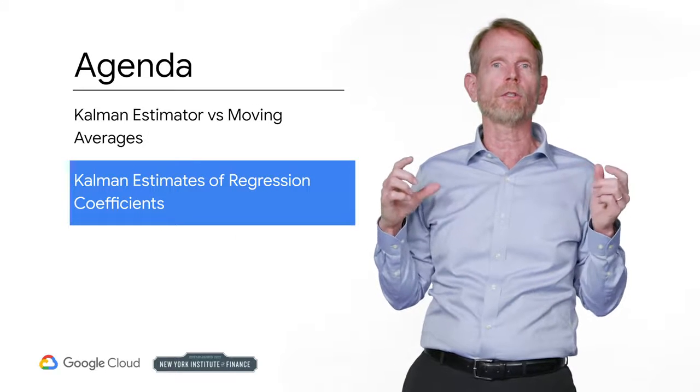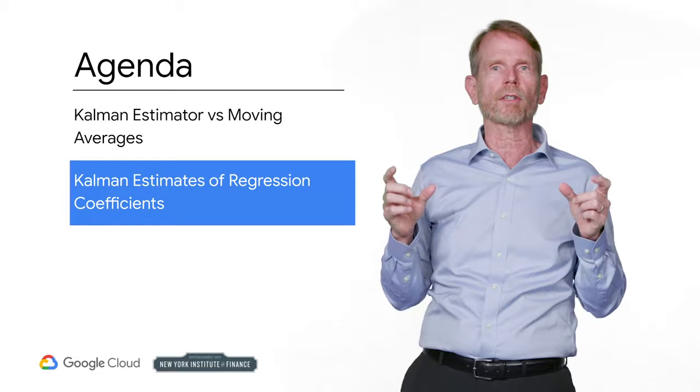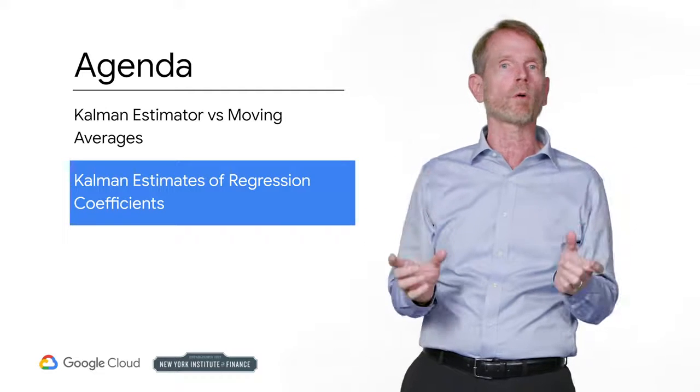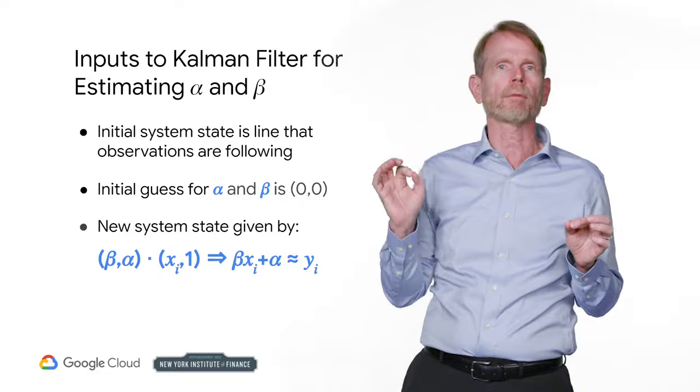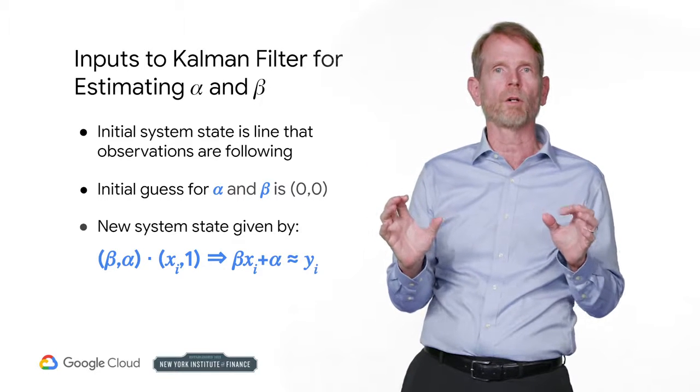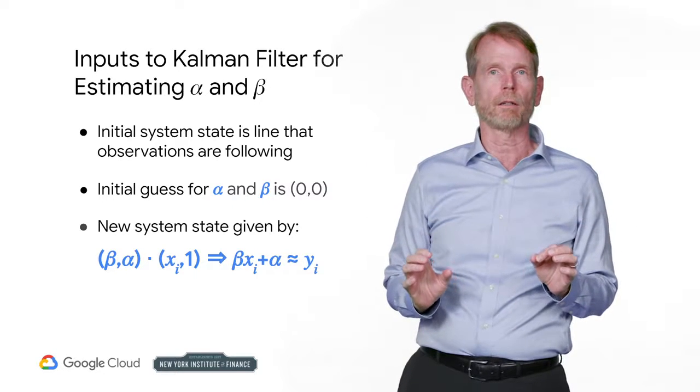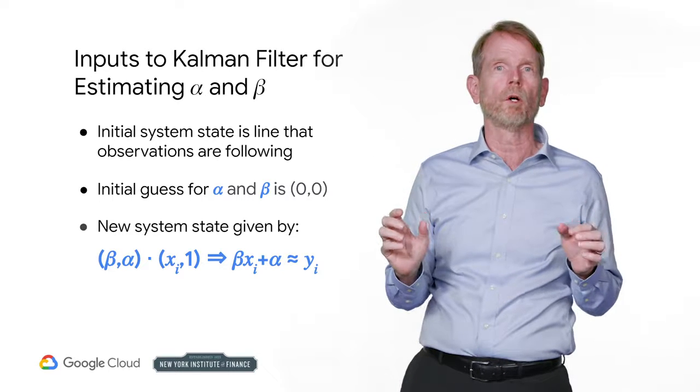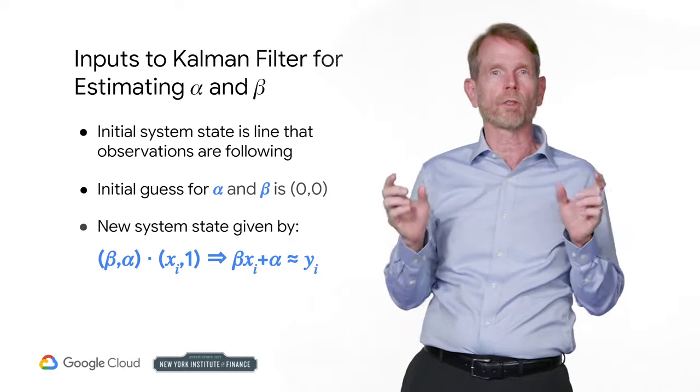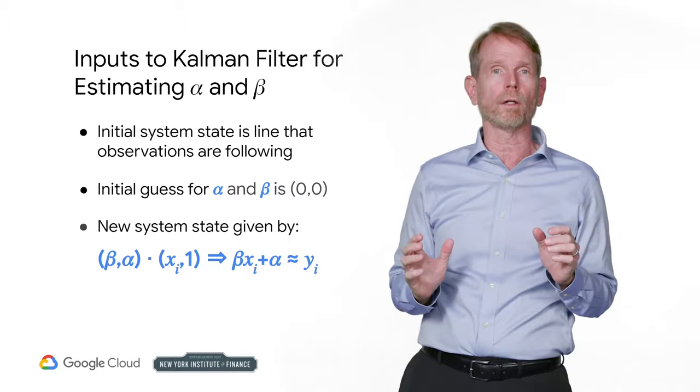Kalman estimators are used in strategies where the trading signal is generated by a moving average crossover. Let's figure out the inputs to our Kalman filter. We'll say that the state of our system is the line that the observations are following with parameters alpha and beta. Our initial guess for these parameters is zero and zero with a covariance matrix which describes the error of our guess of all ones.